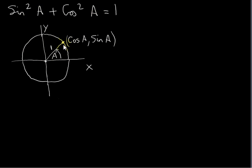This is very easy to see from coordinate geometry. If we just get the distance of this point to the origin, we have to get 1. How do we get the distance? Well, this is just Pythagoras, or we can use the distance formula in coordinate geometry. This distance here is sin A — that's the Y value of this point. And this distance here is cos A. So here we have this right-angled triangle.